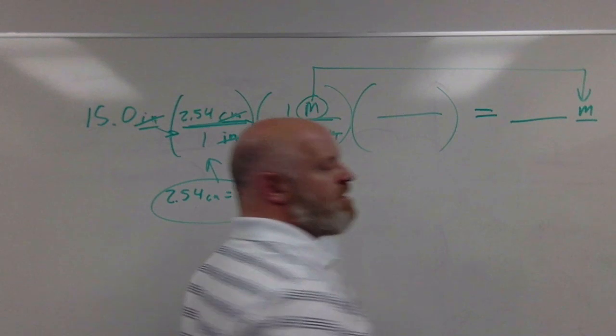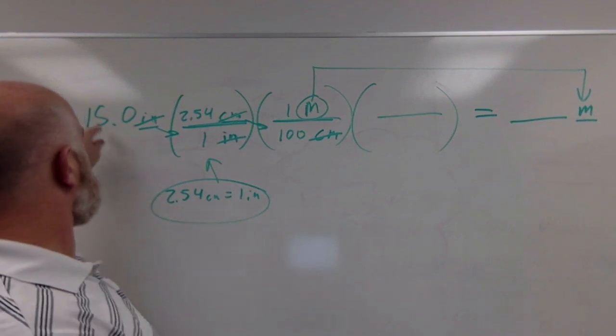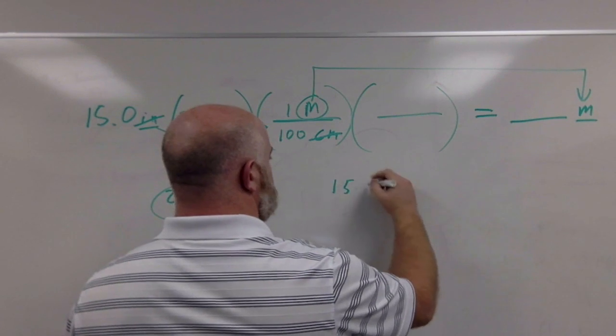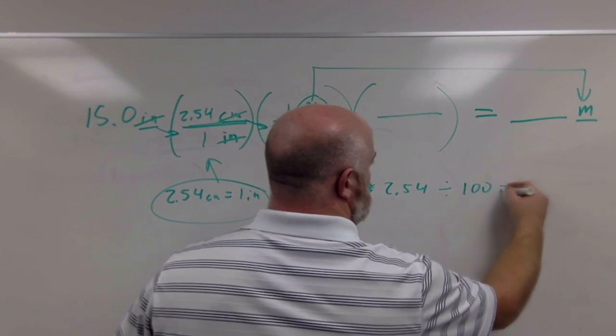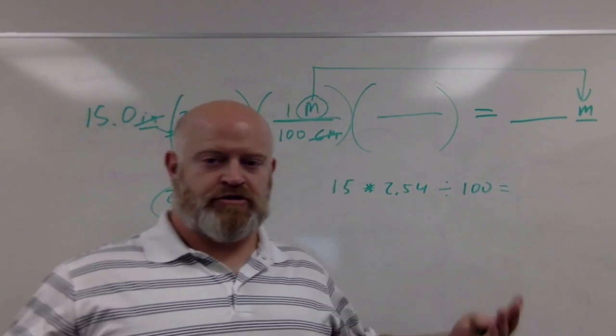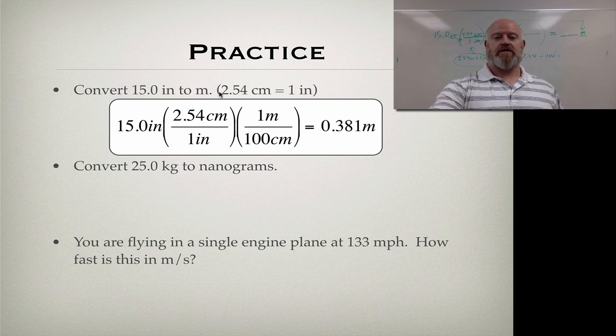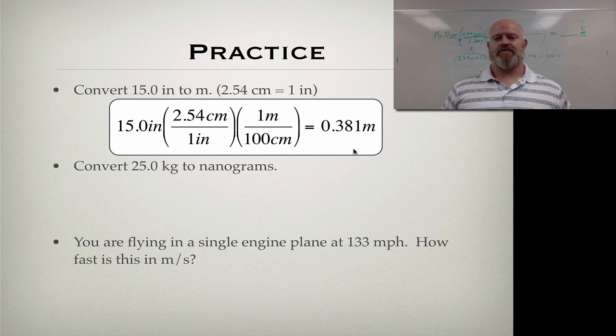Now I just need to put into my calculator: 15 times 2.54 divided by 100. If we do that, we see that our answer comes out to be 0.381 meters. Notice I use 0.381 because my measurement at the start had one, two, three layers of precision in it, so my answer at the end should have one, two, three layers of precision, ignoring the stuff before the decimal which is just there as a placeholder.